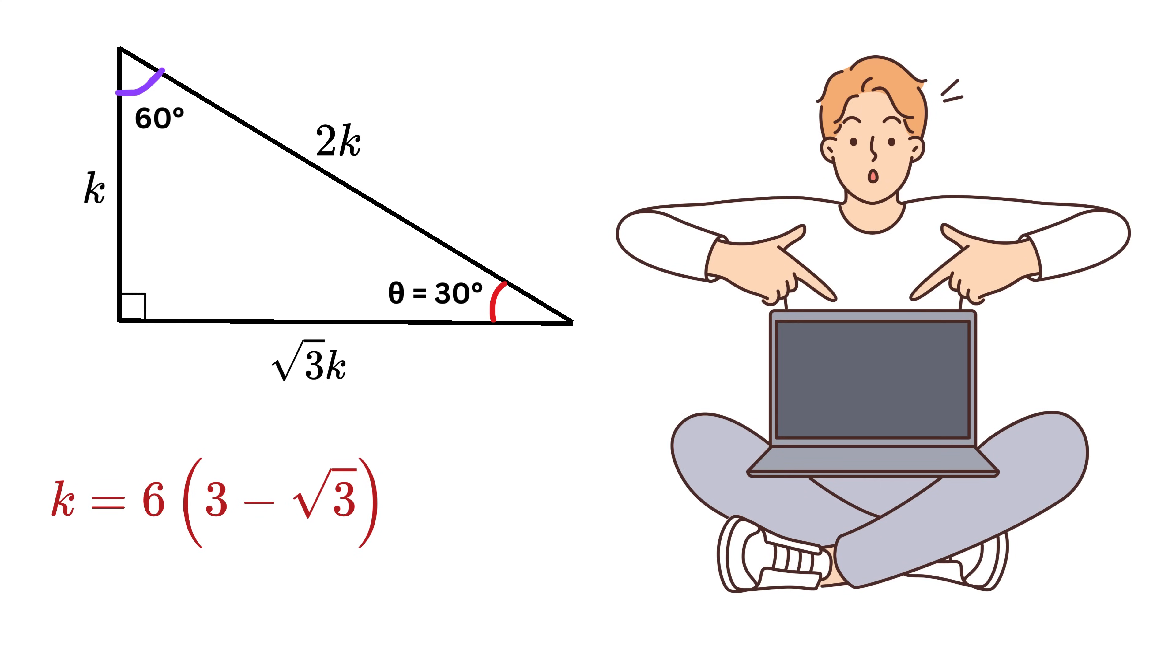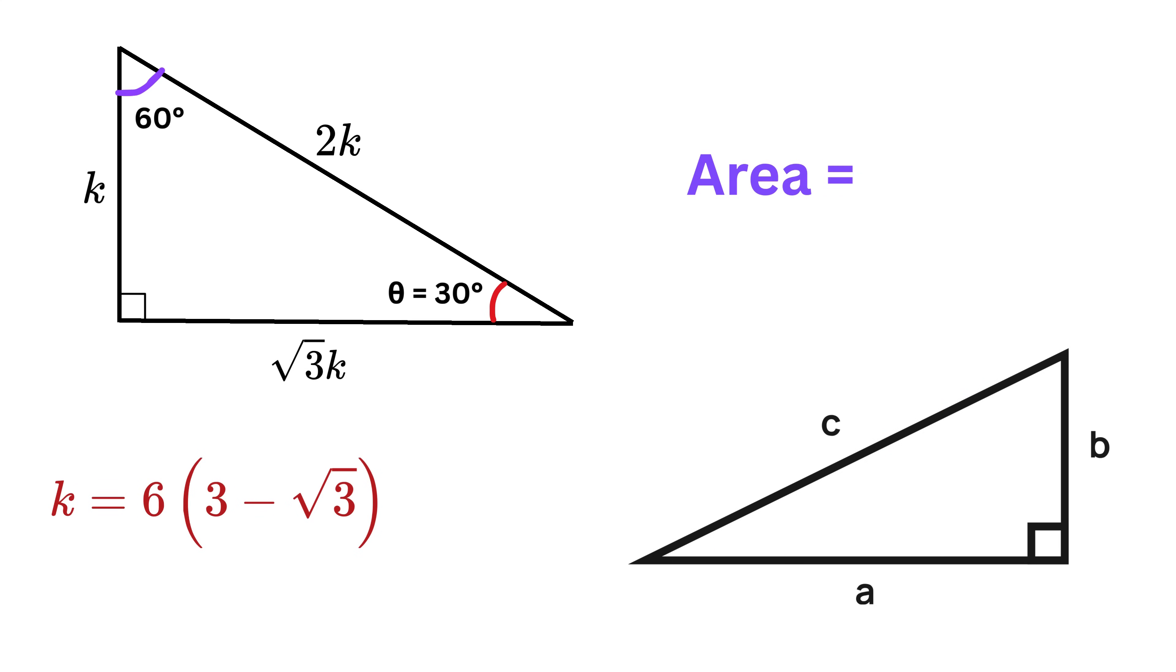Now here comes the climax. The area of a right triangle is half multiplied by the product of the two legs, or the two shorter sides that meet at the right angle. Here the two legs are the side opposite 30 degrees and the side opposite 60 degrees. So the area is one half multiplied by k times root 3k, or square root of 3 over 2 times k squared.